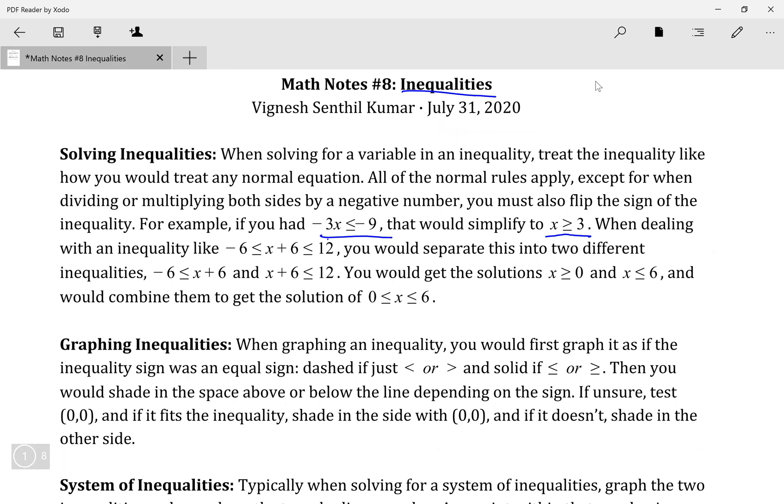Another thing you would know is when you have stuff like negative 6 is less than or equal to x plus 6 which is less than or equal to 12. It's like a double inequality. When solving for this one, you just split into two inequalities. So negative 6 is less than or equal to x plus 6 and x plus 6 is less than or equal to 12, and solve it that way to get x greater than 0 and x is less than or equal to 6.